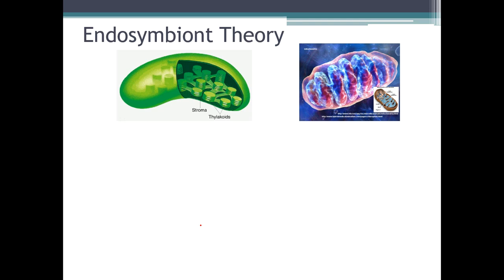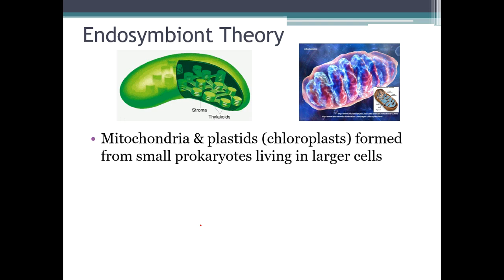So that takes me to the endosymbiont theory. This should be reviewed from chapter six. Basically, some of our organelles that we are familiar with formed when small living things started to live inside of bigger living things. So small prokaryotes lived inside of what would become eukaryotes. We had mitochondria that was actually just a prokaryote. To the best of our evidence, mitochondria was a prokaryote that a eukaryotic cell swallowed up and then decided to keep around so they could have a symbiotic relationship — that's why it's the endosymbiont theory. Endo means inside, symbiont means living together in a symbiotic relationship.